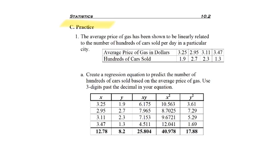So now we're going to go ahead and work out a problem. Question one reads, the average price of gas has been shown to be linearly related to the number of hundreds of cars sold per day in a particular city. So somebody's already found the R coefficient and decided it was close enough to positive or negative one. And so we have our given set of data.